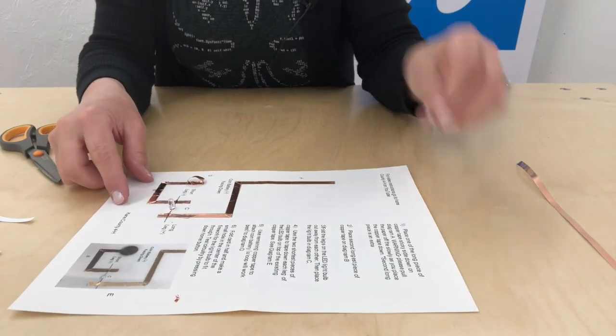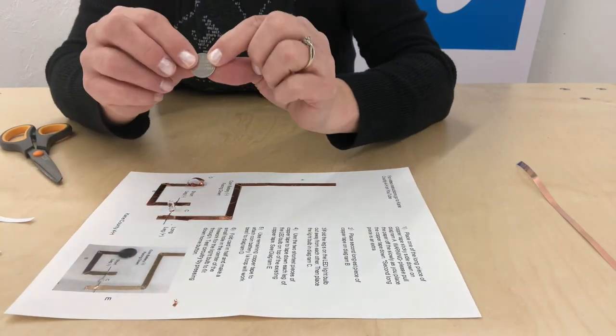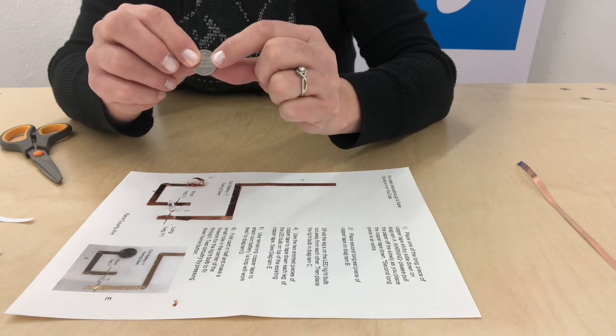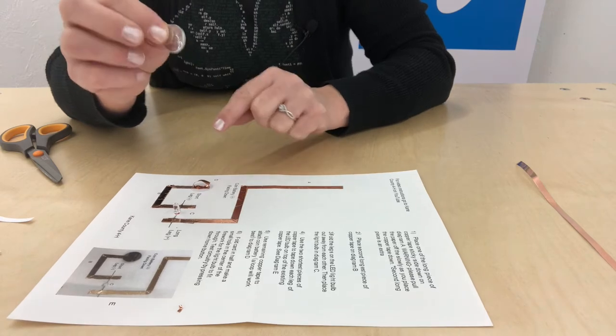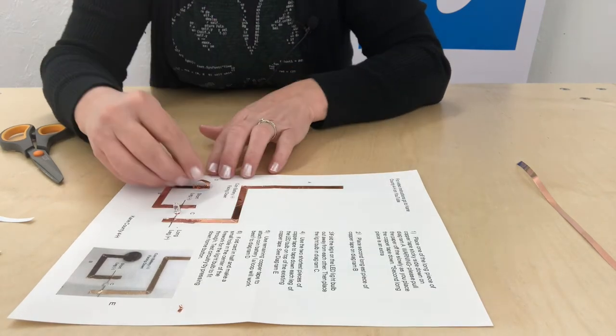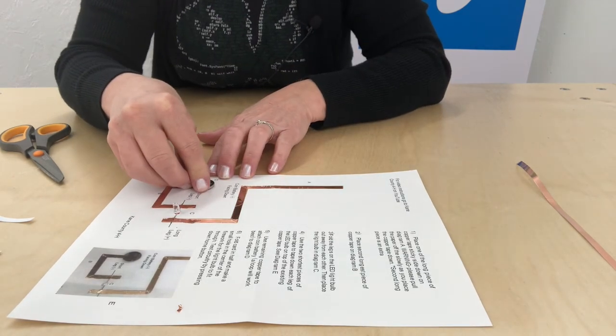All right, now it's time to place our battery. On your battery, you'll have a positive side and a negative side. The shiny side has a plus sign, that's your positive, but the diagram says we need the negative side down. So make sure you put the negative side of the battery down.